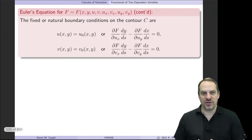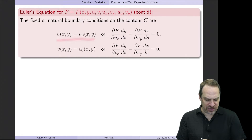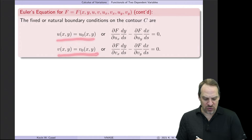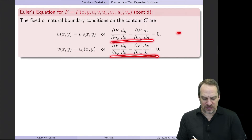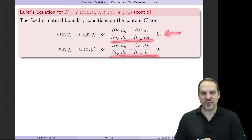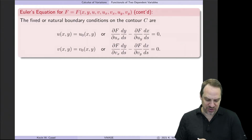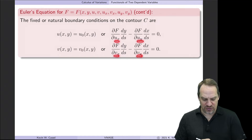The boundary conditions are the same. You either have fixed boundary conditions — known values of u and v at the boundaries — or you have natural boundary conditions. The first one is precisely the same as what we had in the previous case, and the second one is the same but now with u replaced by v.